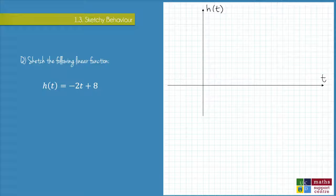We can read directly from this function that our slope is -2 and our h-intercept in this case is 8. So I can plot that 8 straight away.